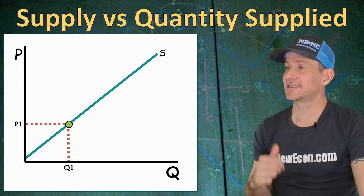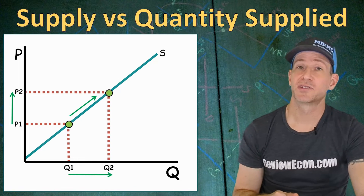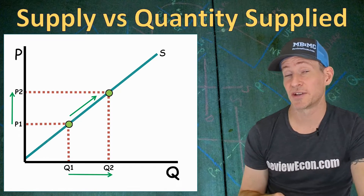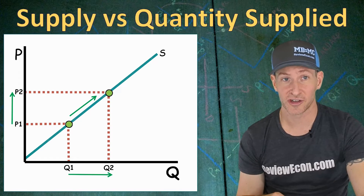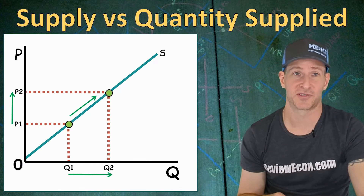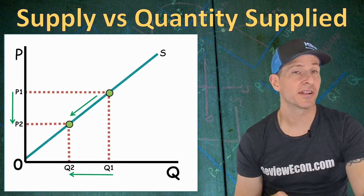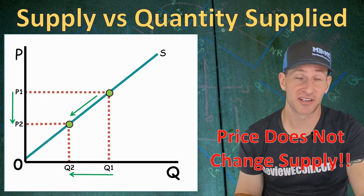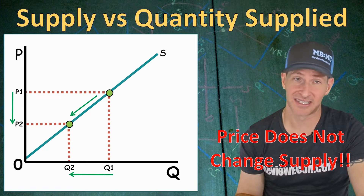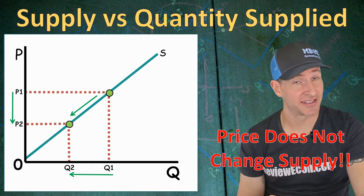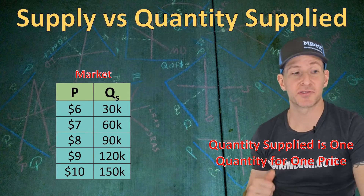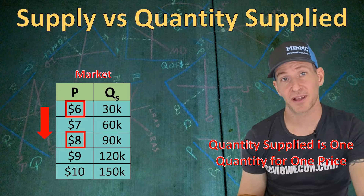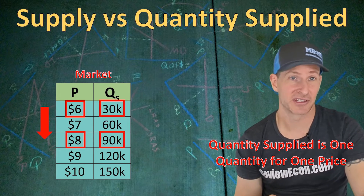An increase in price from P1 to P2 causes movement up the supply curve, giving us an increase in quantity supplied from Q1 to Q2. Q2 is larger because we're further from the origin. If prices decrease, quantity supplied decreases as well. But a change in price changes quantity supplied — it does not change the entire curve. That's why we say price does not change supply. Make sure you know that, because there may be tricky questions about this distinction on your exam. On the market schedule, changing the price from $6 to $8 causes movement along the schedule from 30,000 up to 90,000 bushels.